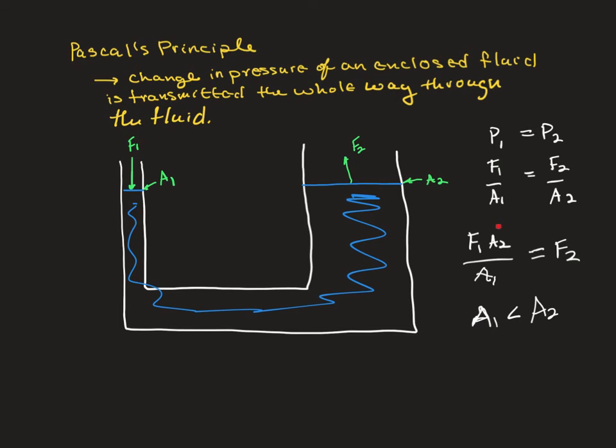So since we're taking a larger number divided by a smaller number, this is always going to be greater than 1. So we're going to be taking a number greater than 1 times force 1, which means that force 2 is going to be greater than force 1.